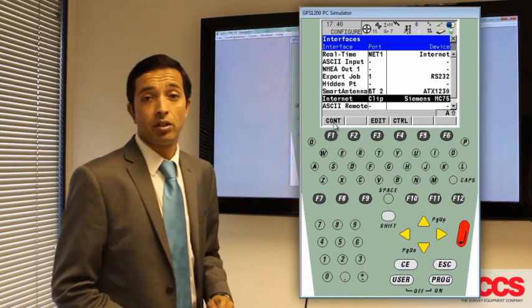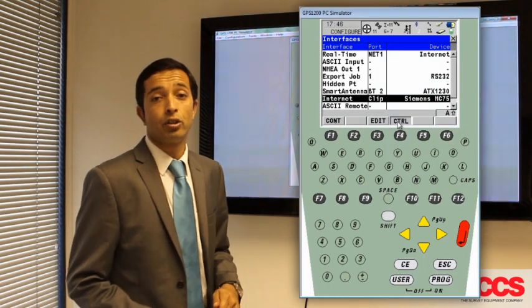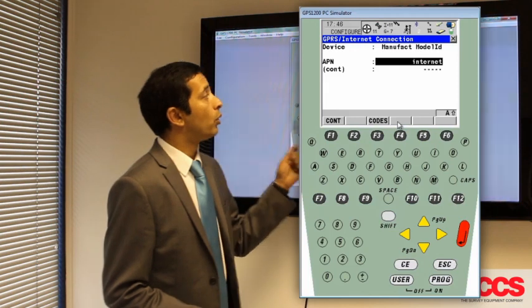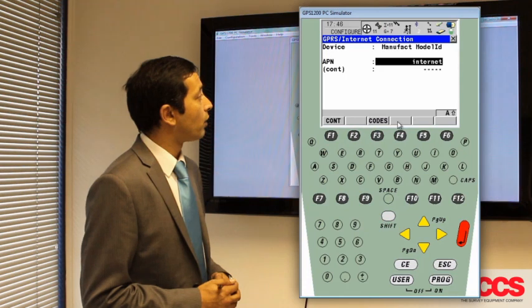If you're happy with these, you can press continue and keeping internet highlighted, go to F4 control and type in your APN. Once again, this is more information you'll be given by your mobile phone provider.